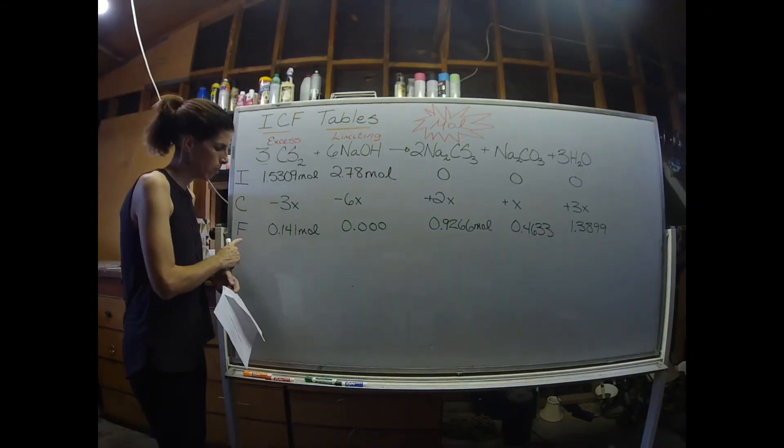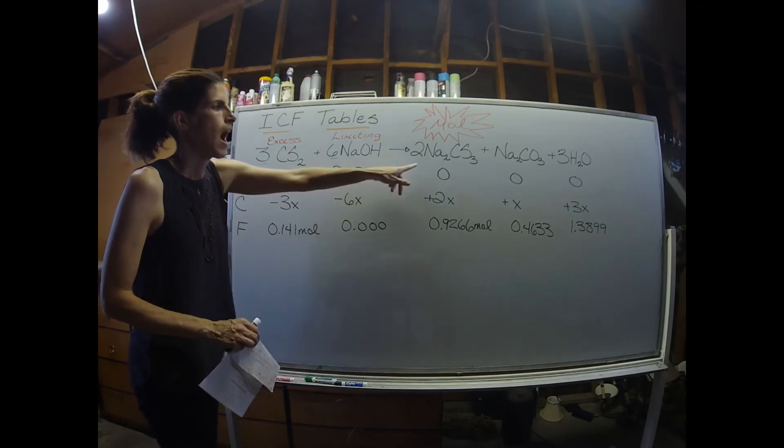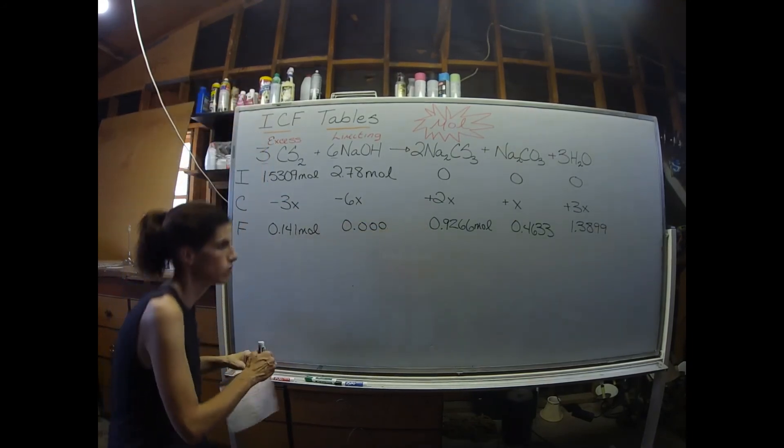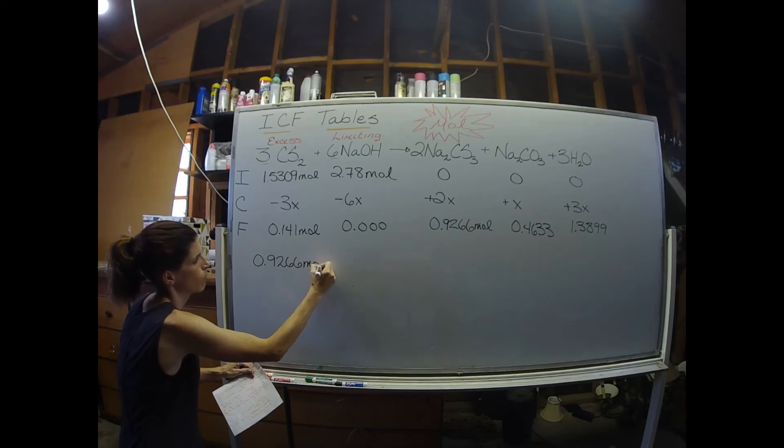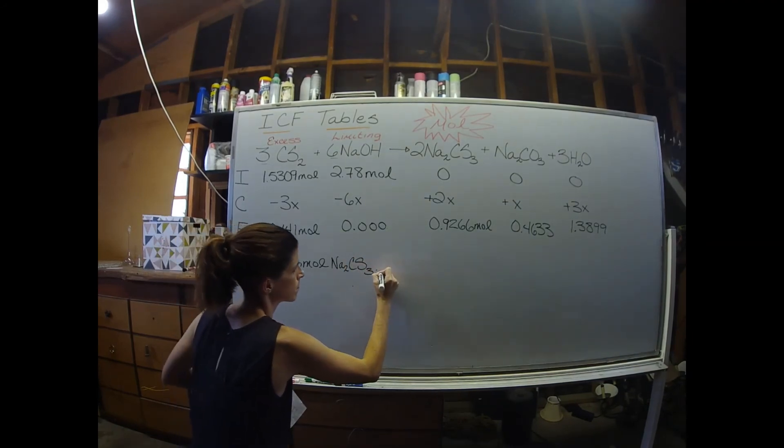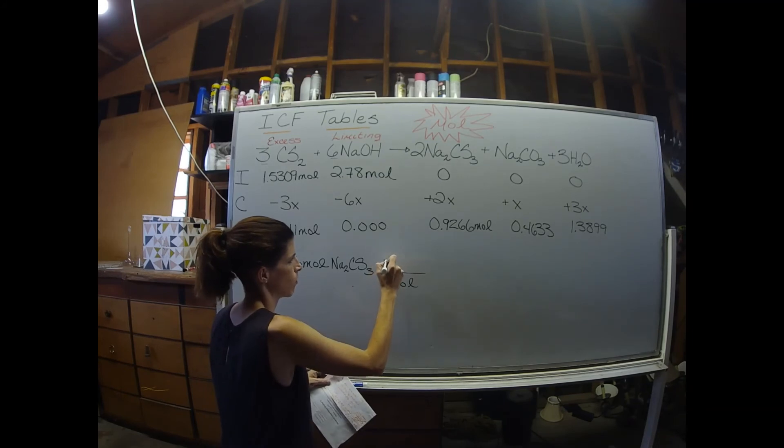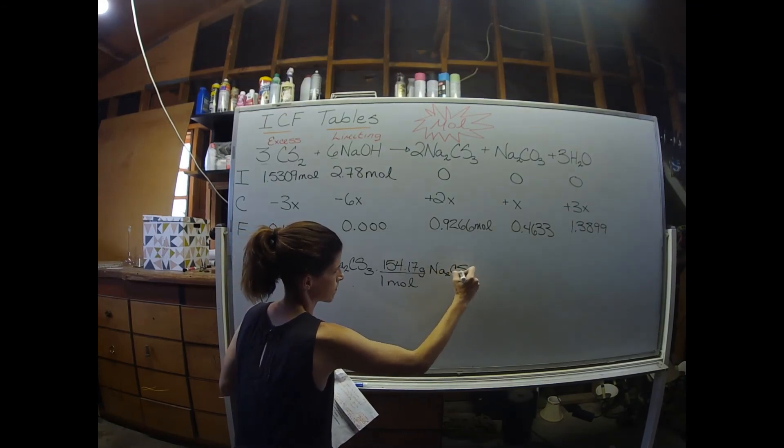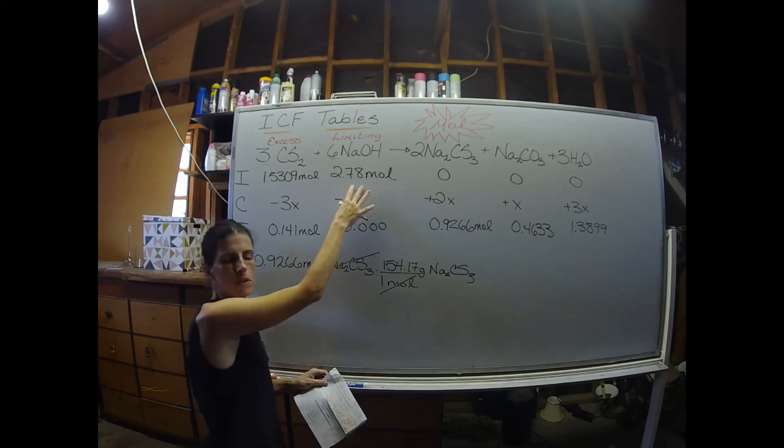Now we can use the mole values in our F line to solve the questions that were asked of us in the problem. First question: how many grams of Na2CS3 were produced? You're going to want to grab the mole value, 0.9266, and we're going to use that with the molar mass. One mole of that has 154.17 grams.